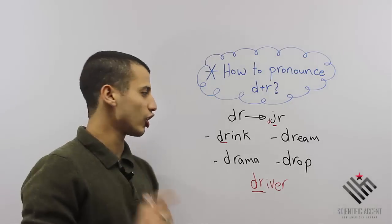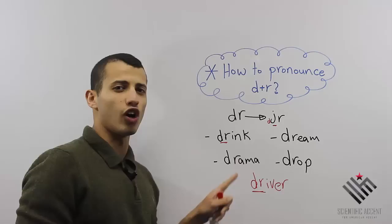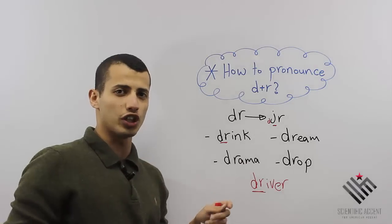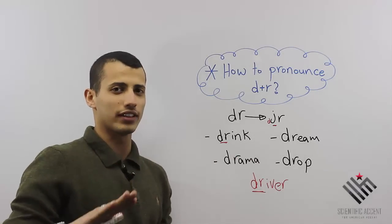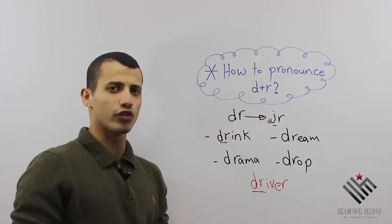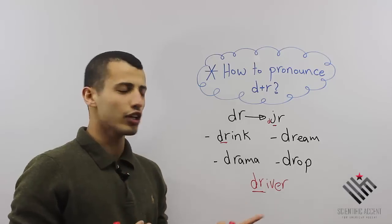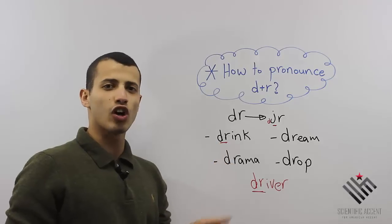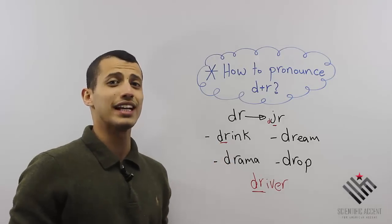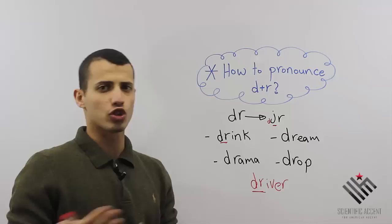I want you to find a paragraph or any page of any book and try to find D plus R words and collect them in a list. Start practicing over and over so you program your tongue and your mouth. Whenever you see D plus R, you'll automatically pronounce it as 'juror', like drink or drama.